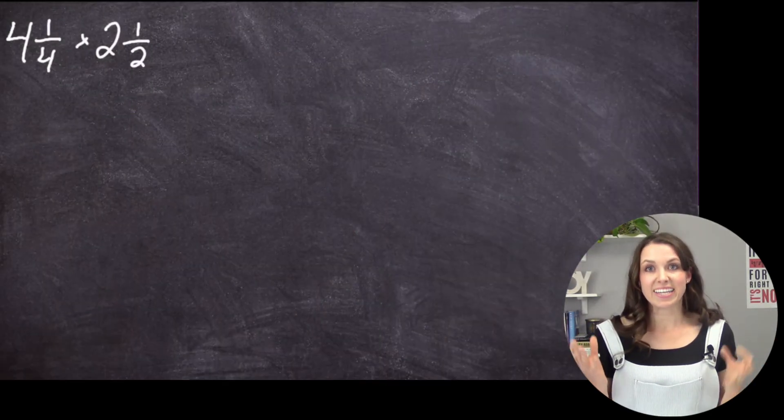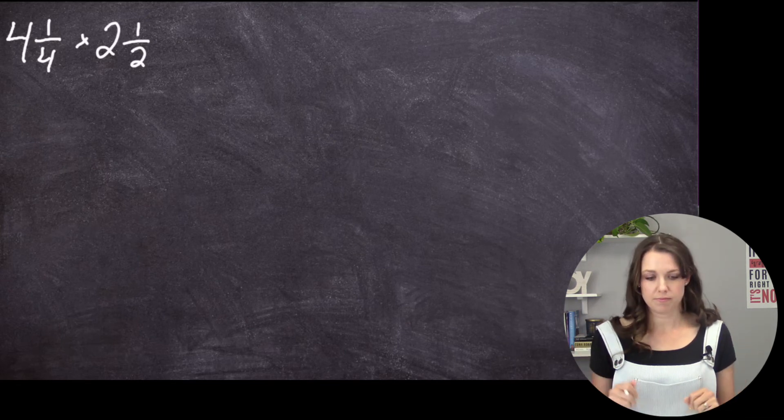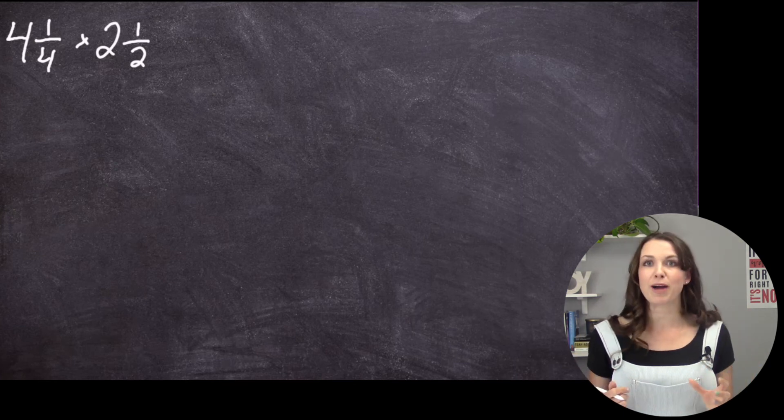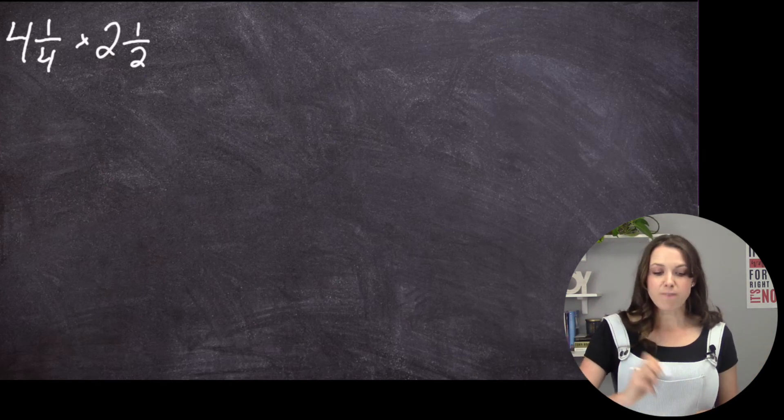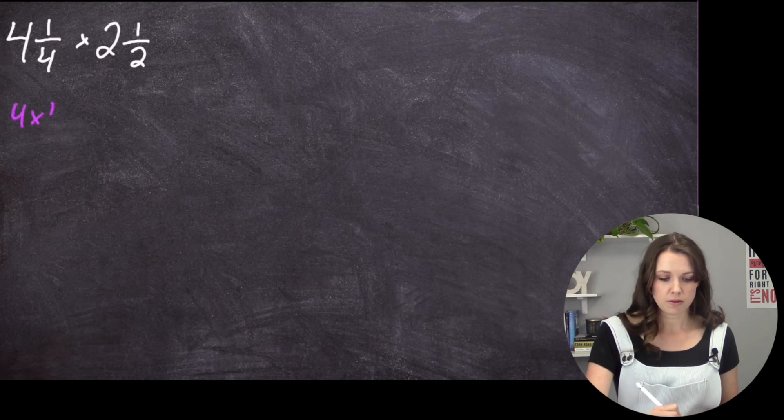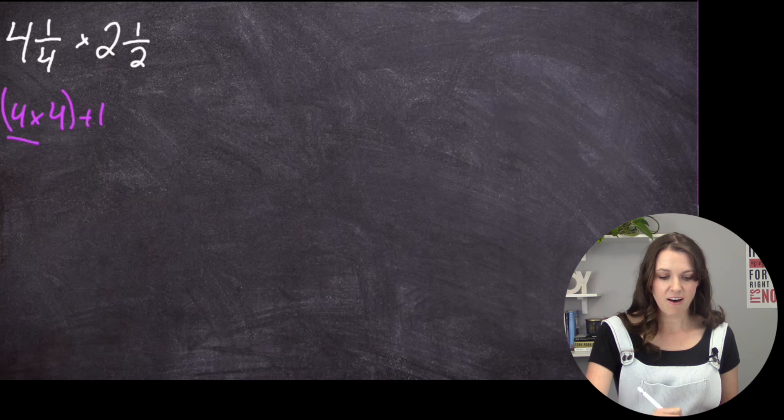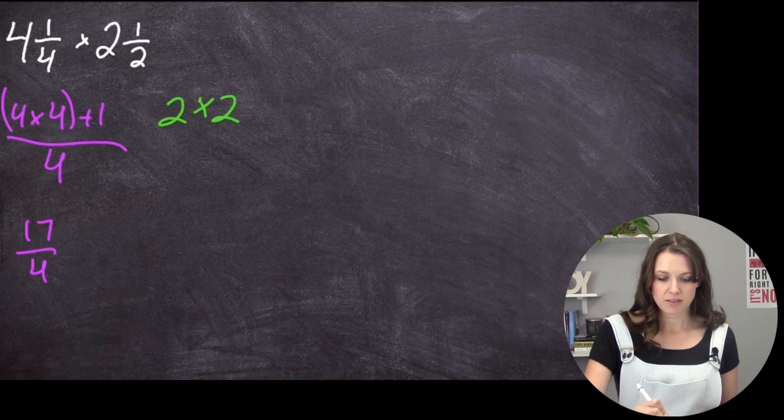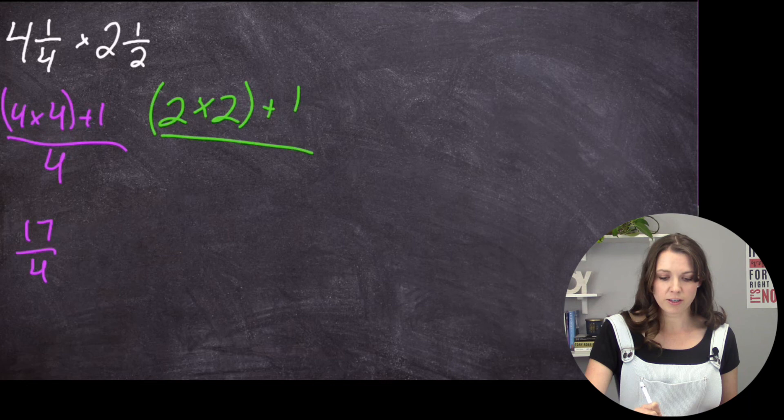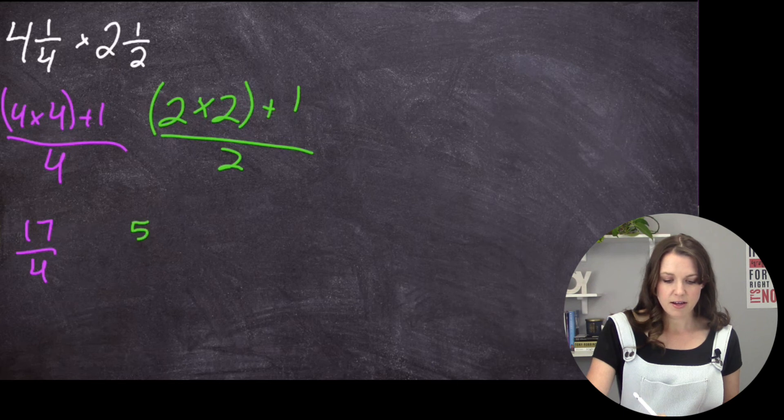So here we have another improper fraction. Two of them. So now we have two more mixed fractions. And what we need to do is turn them into improper fractions, multiply them together, reduce it down. So let's do it. So 4 times 4 plus 1, all over 4. 4 times 4 is 16, plus 1 is 17, over 4. Now we'll go 2 times 2, plus 1, all over 2. So 2 times 2 is 4, 4 plus 1 is 5. So I have 5 over 2.